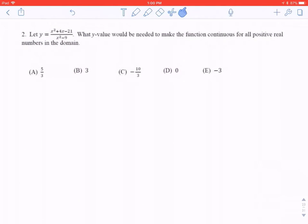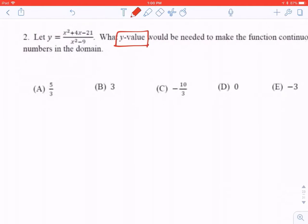Number 2. This says that we are supposed to let y equal this function. What y value must be needed to make the function continuous? In order to be able to make a function continuous, it must mean there's a hole in the graph. So if there's a hole in the graph, that means factors have to cancel.